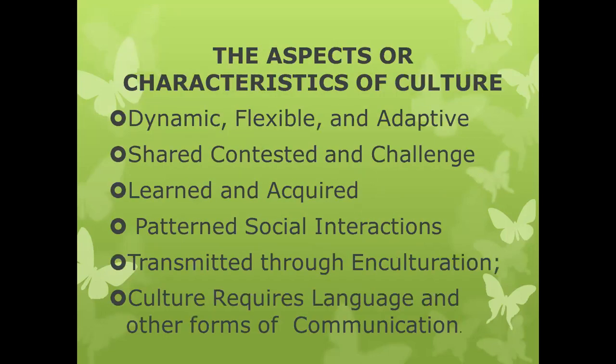So what are the aspects of culture? We have at least six aspects or characteristics of culture. Number one: culture is dynamic, flexible, and adaptive. Two: culture is shared, contested, and challenged. Three: culture is learned and acquired. Four: culture is patterned social interactions. Five: culture is transmitted through enculturation. And lastly, culture requires language and other forms of communication.